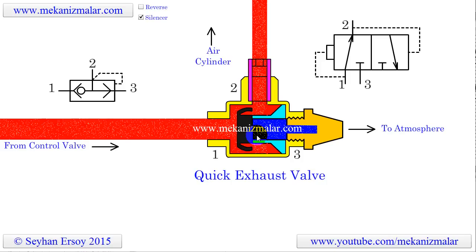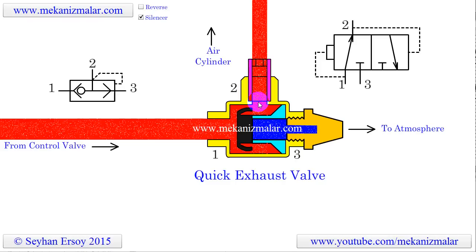When the pressurized air comes from the control valve via port 1, it pushes the rubber spool toward port 3 and blocks it. At the same time, the circumference of this rubber spool bends inward and allows the compressed air to reach port 2. Port 2 is directly connected to the blind end of the air cylinder.